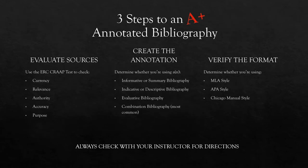There are three basic steps to developing an annotated bibliography. First, you'll need to evaluate your sources — you can use the CRAAP test to do that, which we'll get to in just a minute. The next step is to create the annotation, and for that you'll need to determine what type of annotation you're using, as there are four different types. The final step is to know which writing style your instructor requires so you'll know how to format your annotated bibliography.